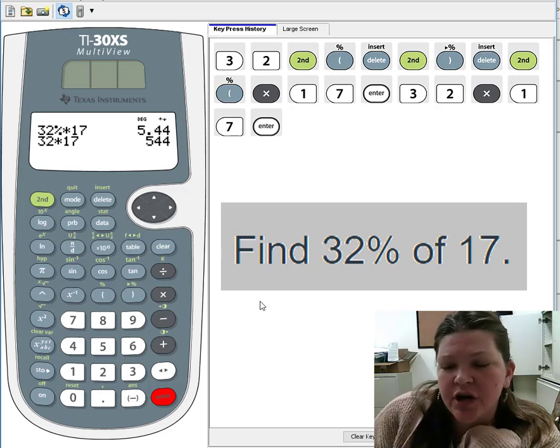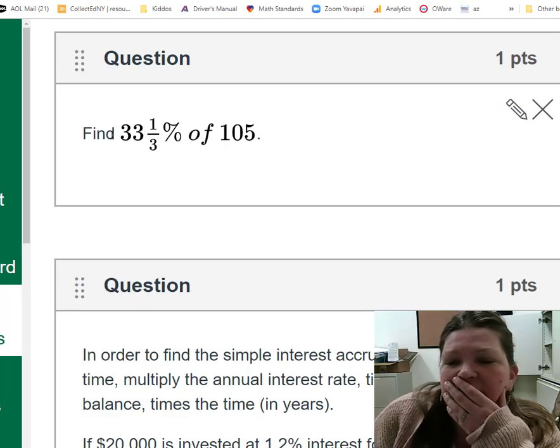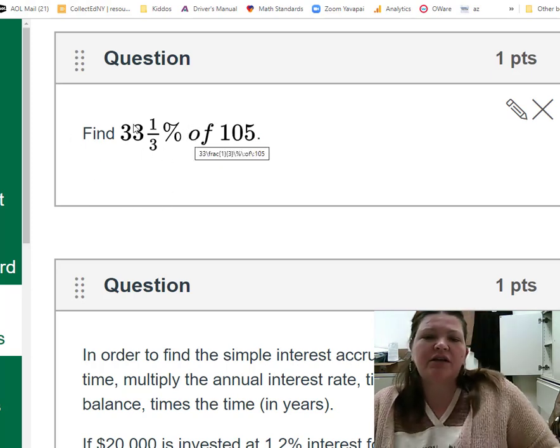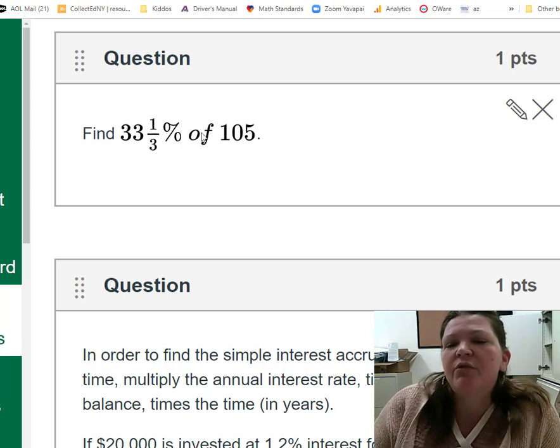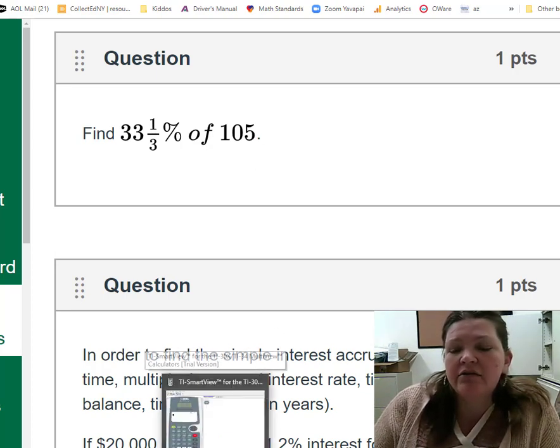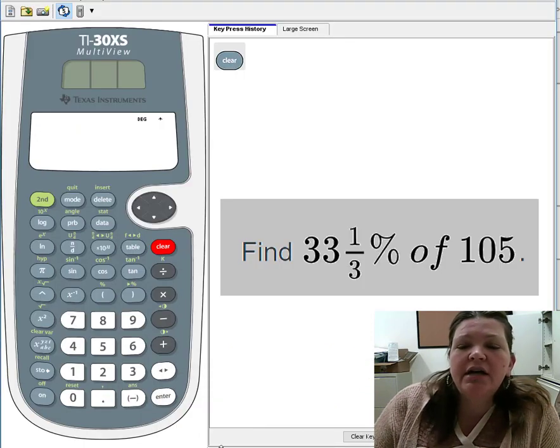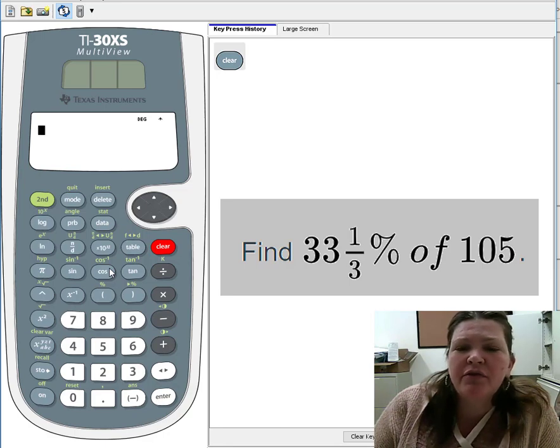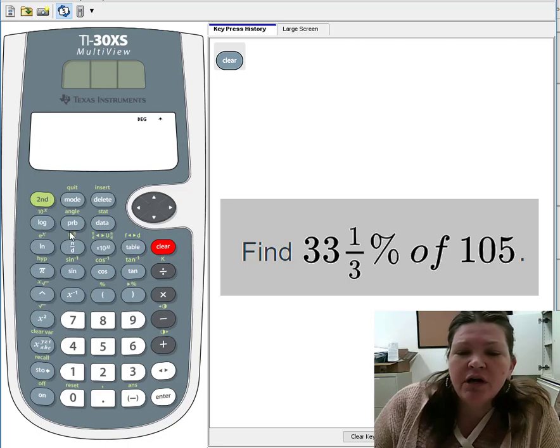So the correct answer is 5.44. 32% of 17 is 5.44 or 5 and 44 hundredths. Let's try the next one. I just wanted to see if I could intimidate you by throwing a fraction and a percent at you. So 33 and 1/3 percent of 105 looks gross, but it's easily handled in our TI. That first number is what's known as a mixed number: 33 and 1/3. It's got part whole number, part fraction.